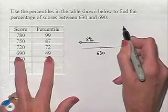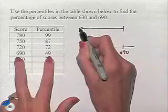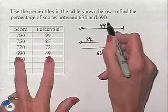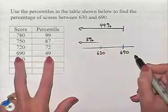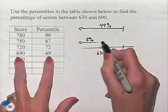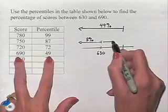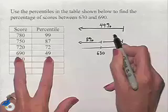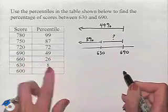That tells us that 49% would be represented to the left of the value 690. We're interested in figuring out the percentage of scores from 630 to 690, so this is what we're looking for.